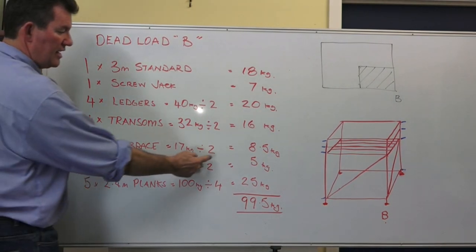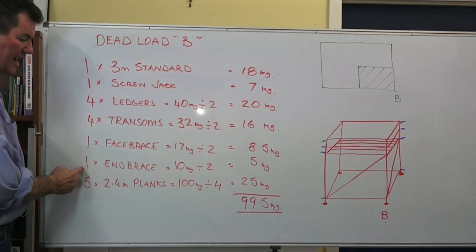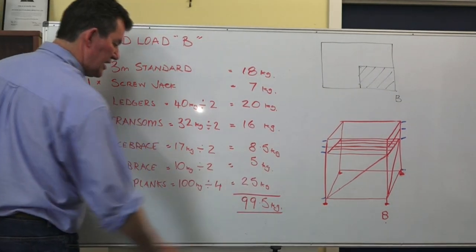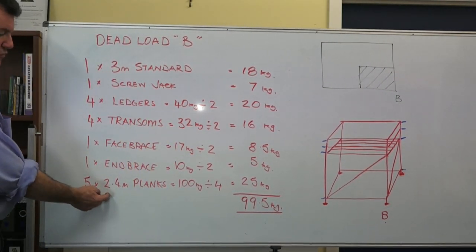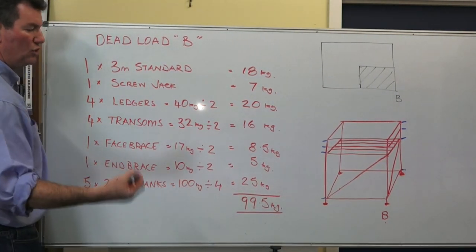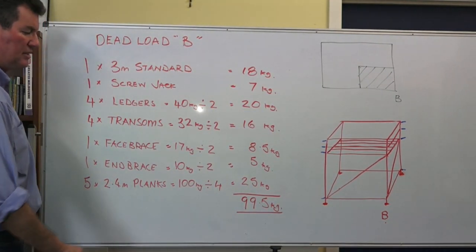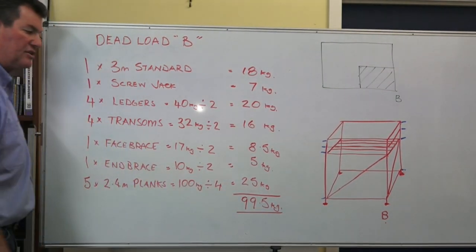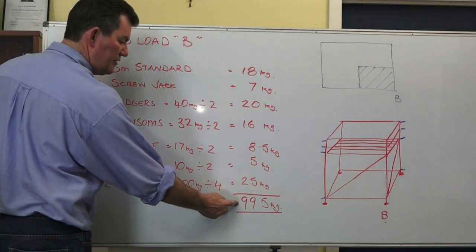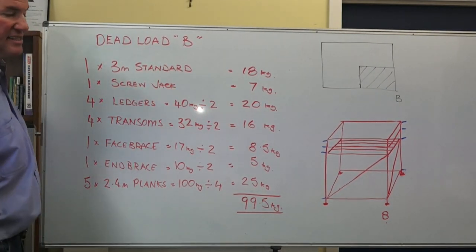1 face brace, 17 kilos divided by 2, once again we only want half the weight, 8.5 kilos. 1 end brace, 10 kilos divided by 2, we only want half the weight, 5 kilos. And then the planks, there's 5 2,400 boards in there. They weigh 20 kilos each, that's 100 kilos but we only want quarter of the weight. One quarter, you can see the shaded area for the boards, so divided by 4 equals 25 kilos. Out of all the components in that bay or attached to that standard, 99.5 kilos of dead load is being transferred down standard B.